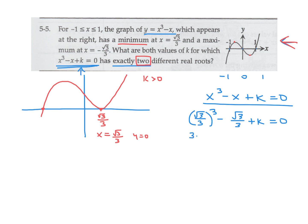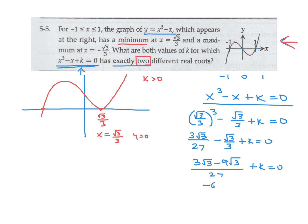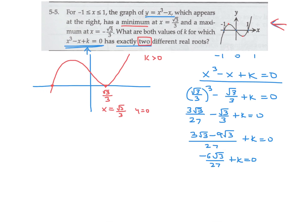That gives us (root 3 over 3) cubed minus (root 3 over 3) plus k equals 0, which is 3 root 3 over 27 minus root 3 over 3 plus k. With a common denominator of 27, that becomes 3 root 3 minus 9 root 3 over 27 plus k equals 0. So minus 6 root 3 over 27 plus k equals 0, and therefore k equals 6 root 3 over 27, which reduces to 2 root 3 over 9.